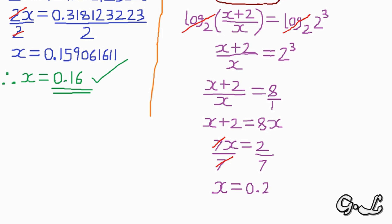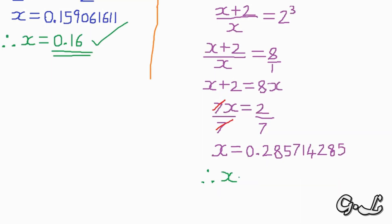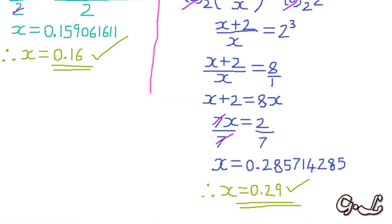Therefore x equals 2 over 7. Dividing 2 by 7 gives 0.285714..., so the value of x is approximately 0.29. This is how you score marks in an exam by answering questions related to logarithmic functions and exponential equations. Thank you for watching — see you in another video tutorial soon.